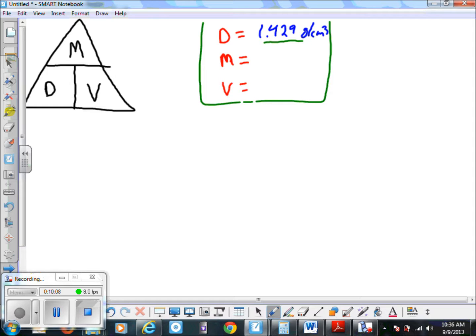It says calculate the mass of one cubic centimeter of oxygen. One cubic centimeter would be the volume, but I'm not going to do that problem for you. So let's just say 20 cubic centimeters of oxygen, and it wants to know the mass.